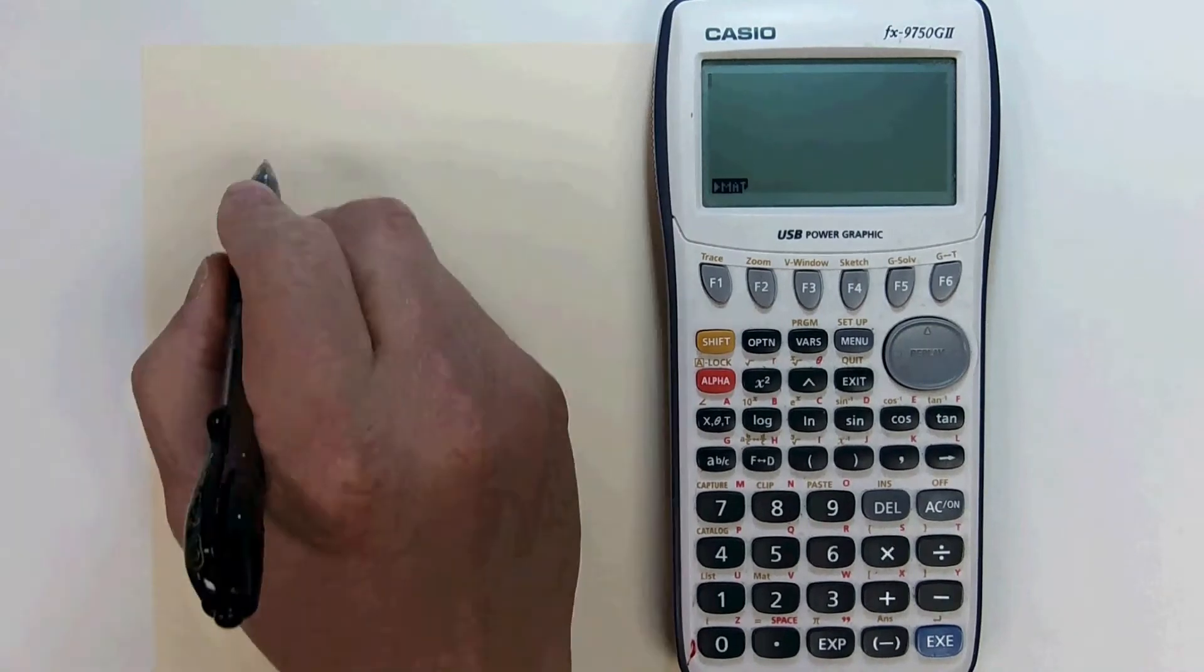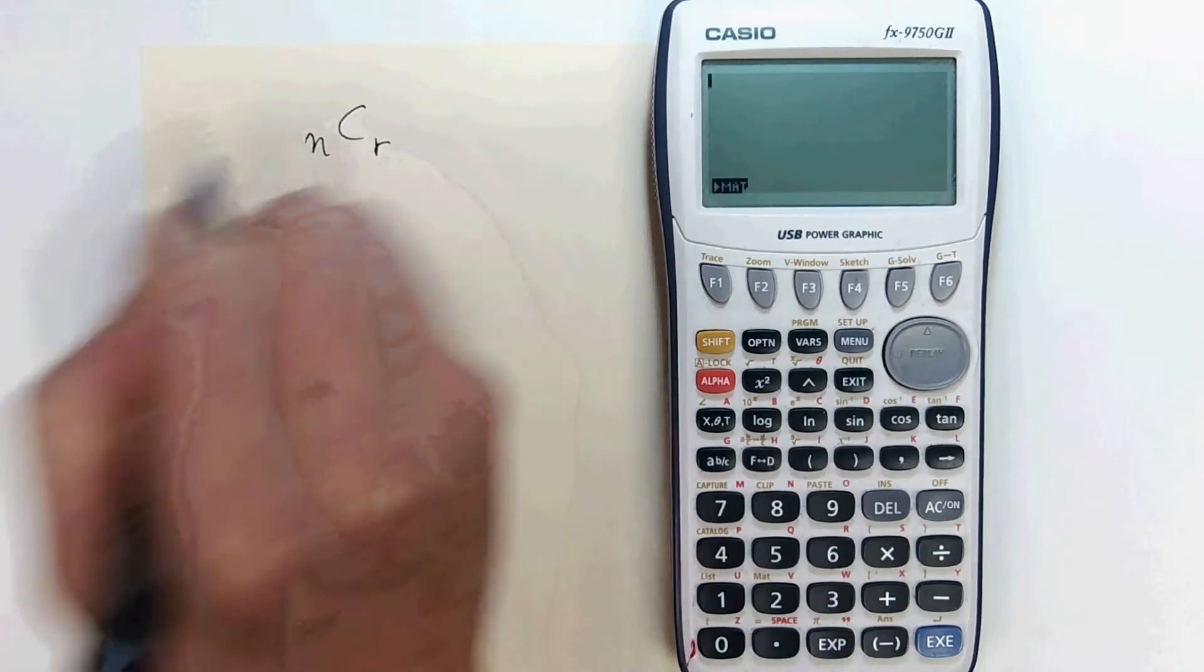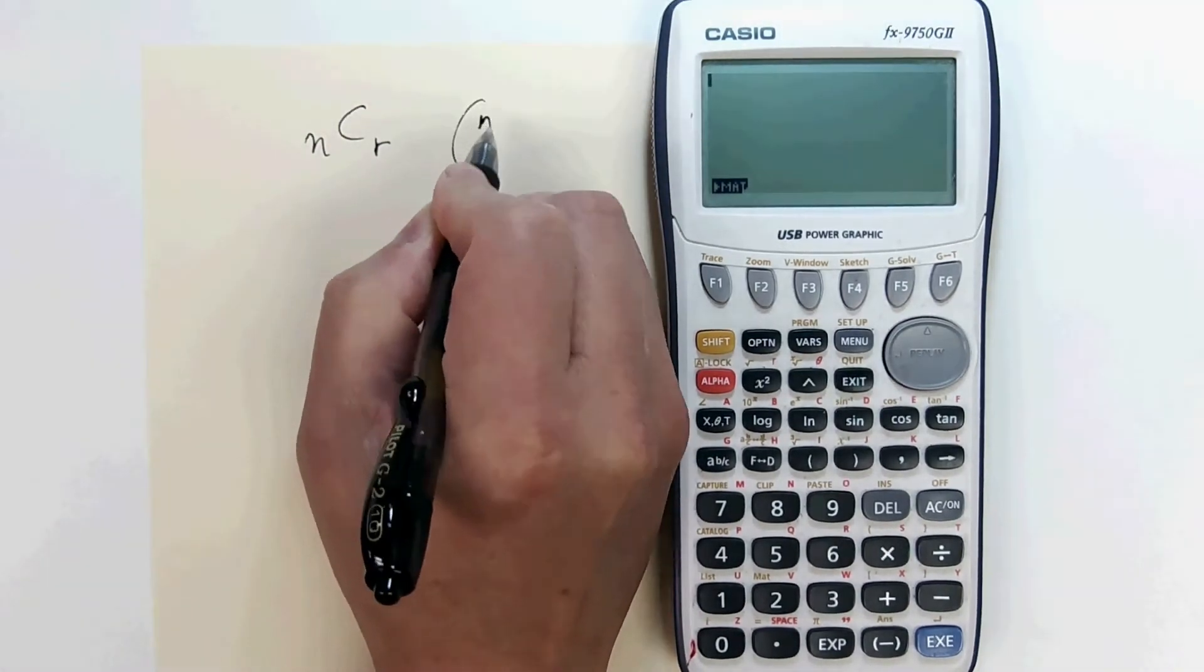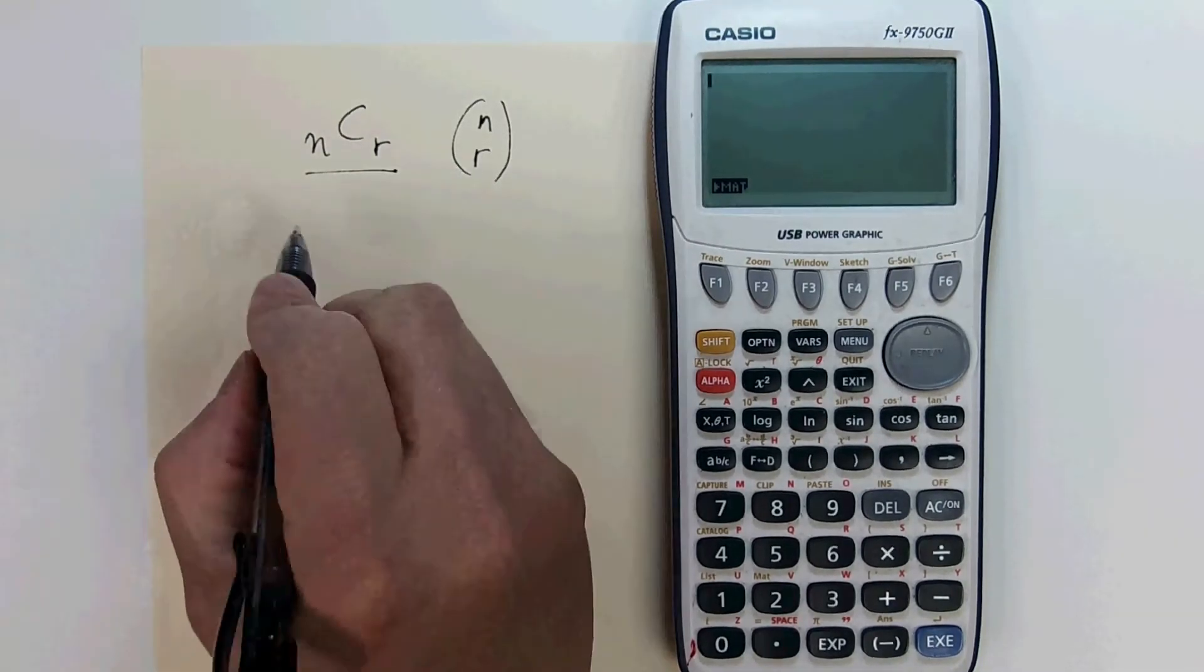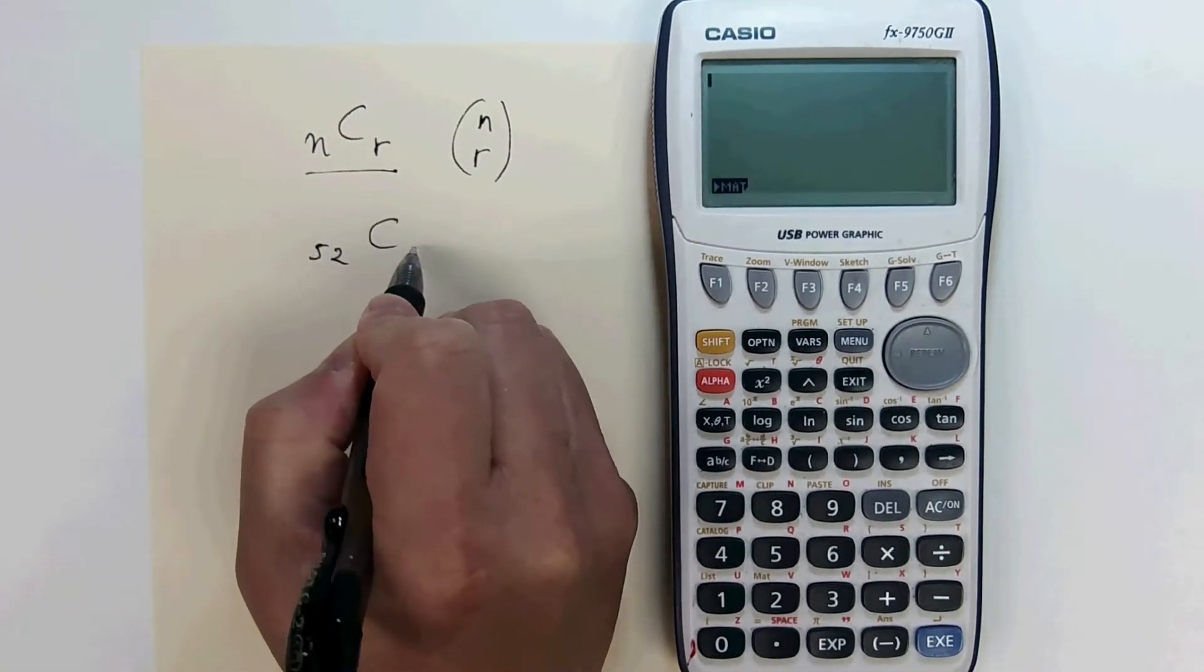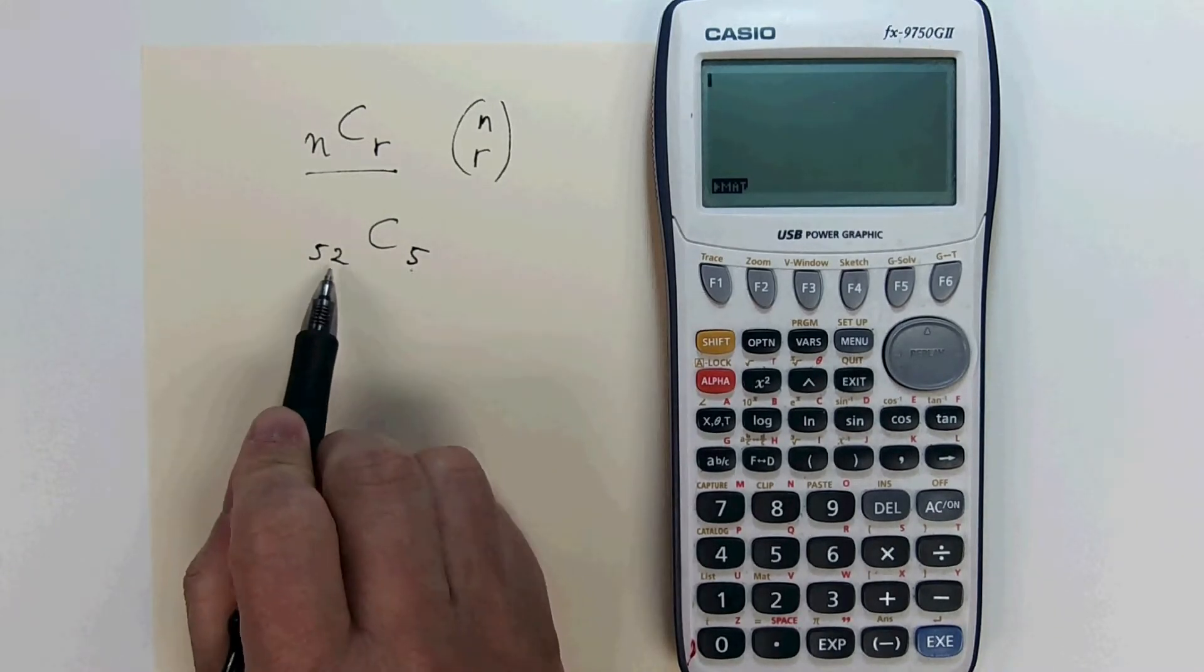The binomial coefficient is written either n choose r with the letter c, or n choose r in parentheses vertically on top of each other. Most calculators go for the letter c. Let's compute 52 choose 5, number of ways to select 5 cards out of a deck of 52.